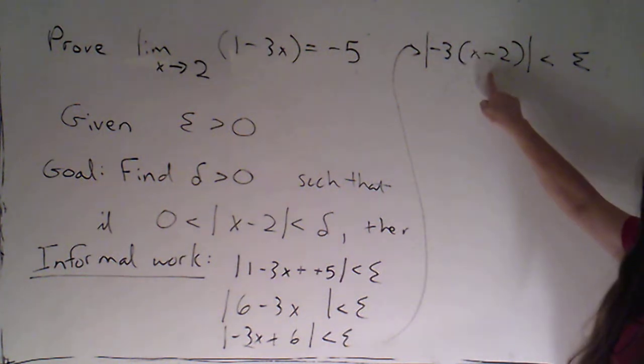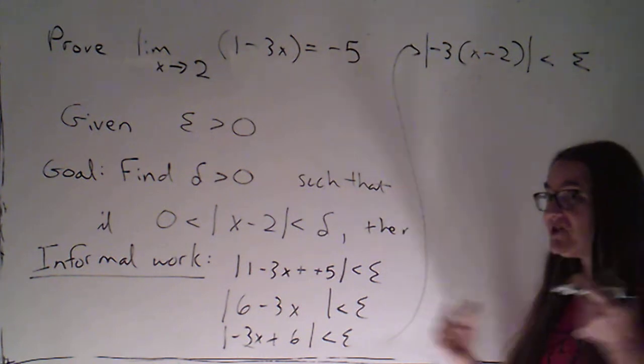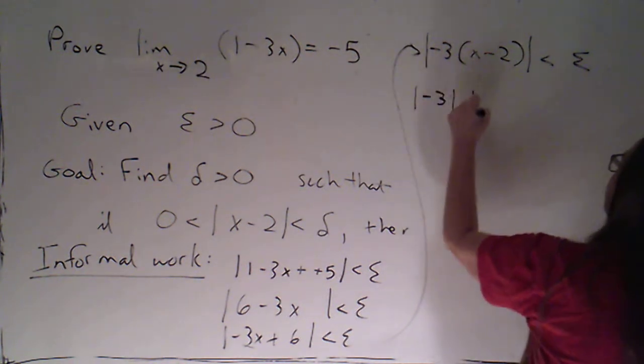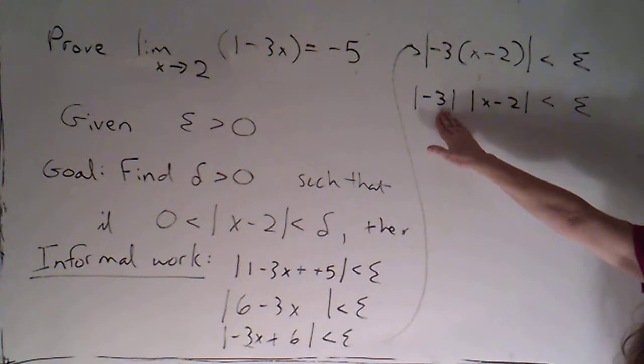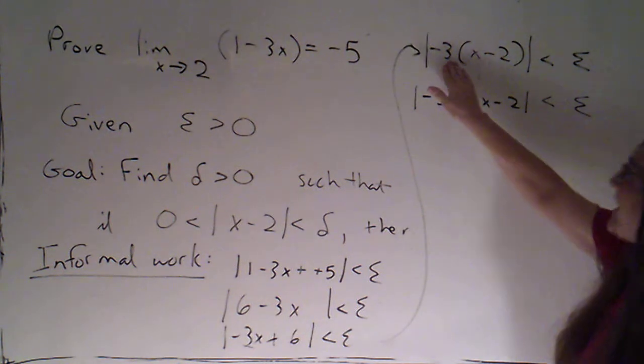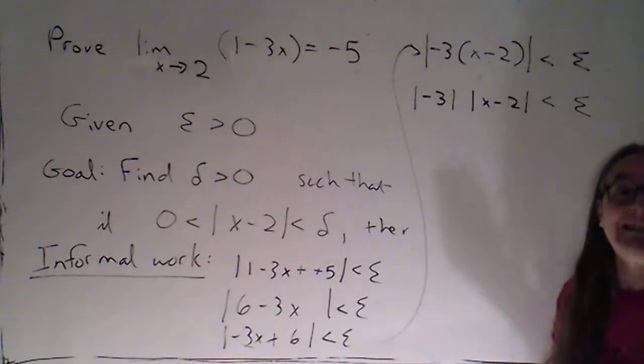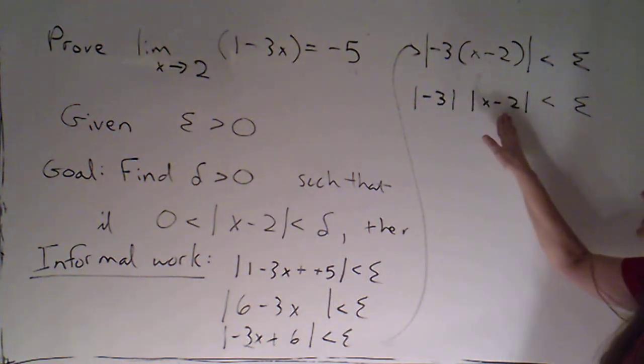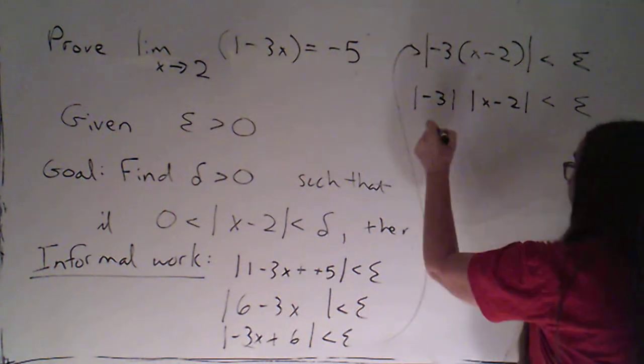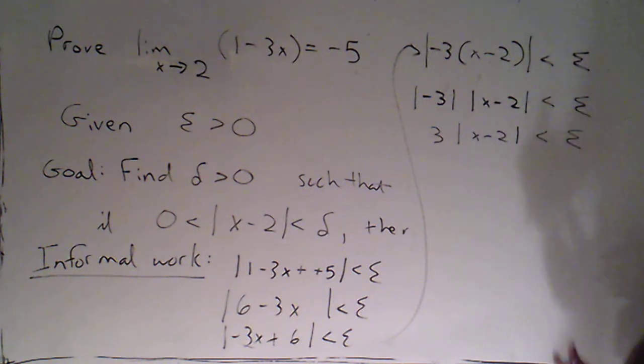Now, this is the absolute value of a product. Absolute values distribute over multiplication. Don't distribute over addition, but they do distribute over multiplication. So this is the absolute value of negative 3 times the absolute value of x minus 2, and that's got to be less than epsilon. Very important that that is still in the absolute values. I did not factor a negative all the way outside of the absolute value. The left-hand side here was something that's not negative. It's still something that's not negative because that's two things that aren't negative multiplied together. The absolute value of negative 3 I happen to know is 3. So I could write this as 3 times the absolute value of x minus 2. That's the thing that I'm going to want to be less than epsilon.